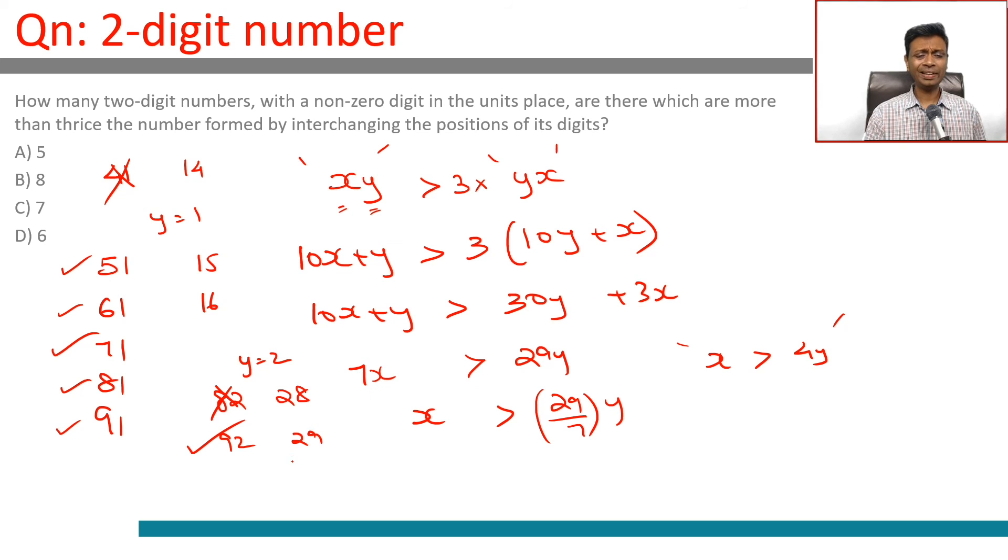Y could be 3, but if y is 3, x should be more than 4y, that's not possible. So there are 1, 2, 3, 4, 5, 6 numbers. This is what we are looking for.